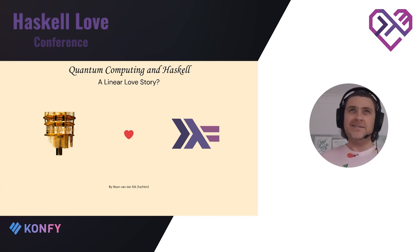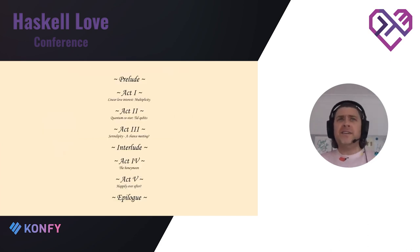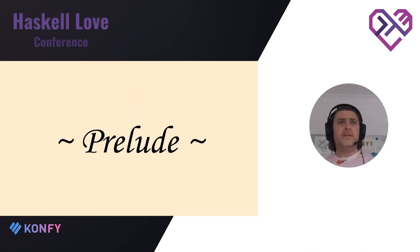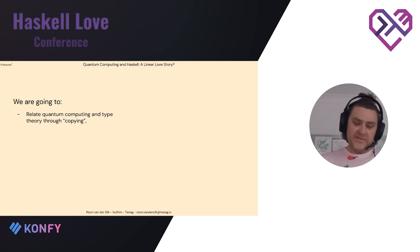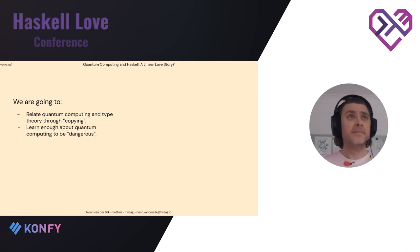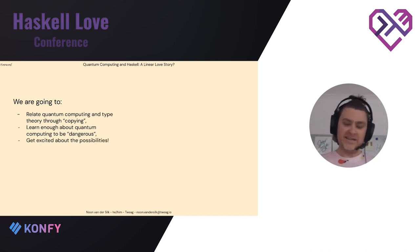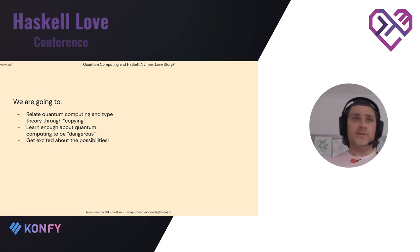So we're going to talk about quantum computing and Haskell and proceed in the following way. We're going to construct a little story — we're going to look at the linear part, the quantum part, and combine them together to see how they get along. I'm going to relate quantum computing and type theory through this idea of copying. We're going to try to learn enough about quantum computing to be what I would call dangerous — not necessarily knowing all the proofs, but enough to talk to people. The one thing I want you to get out of this is to be a little bit excited about the intersection of these two things.